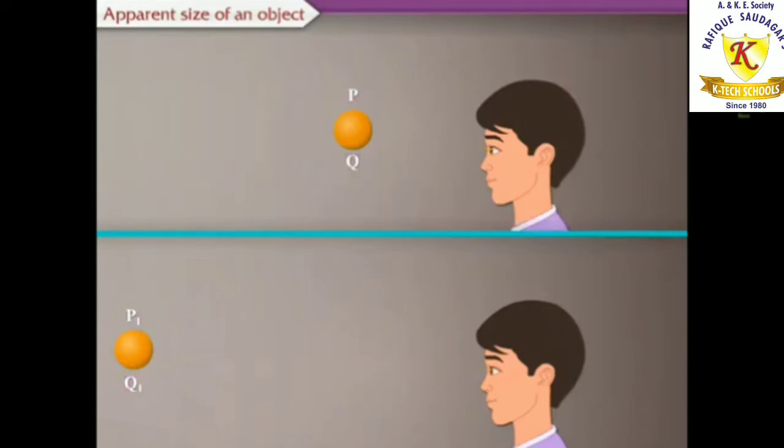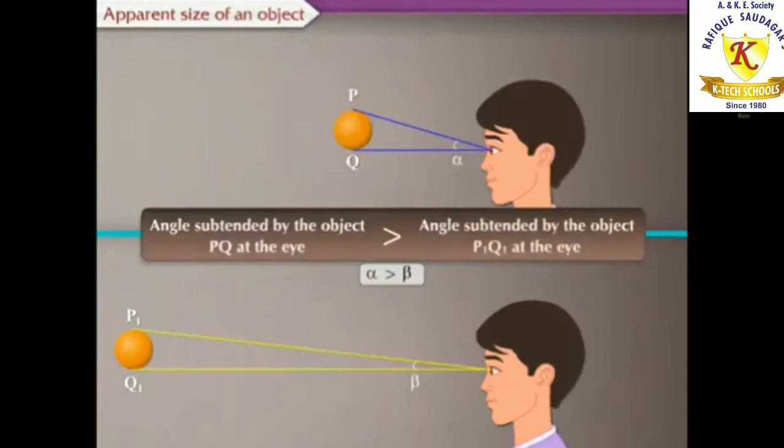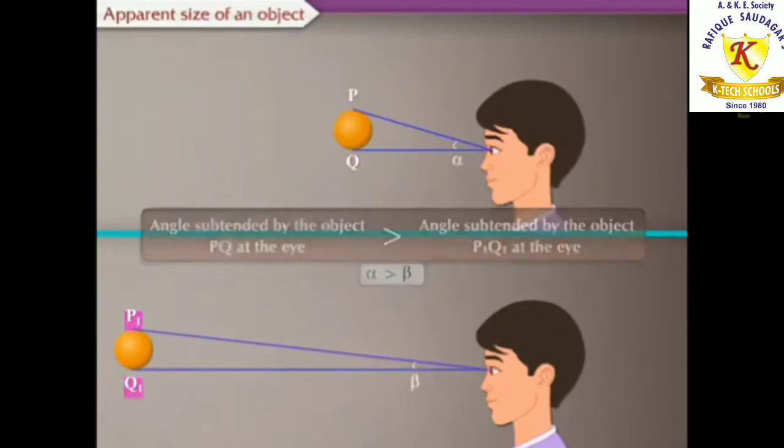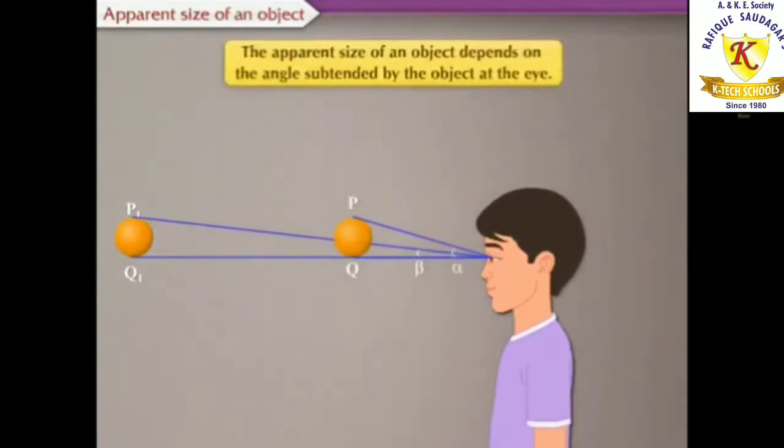As the angle subtended by the object PQ at the eye is greater than the angle subtended by the object P1Q1 at the eye, thus the apparent size of an object depends on the angle subtended by the object at the eye.